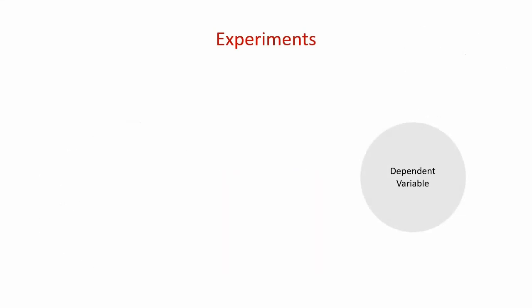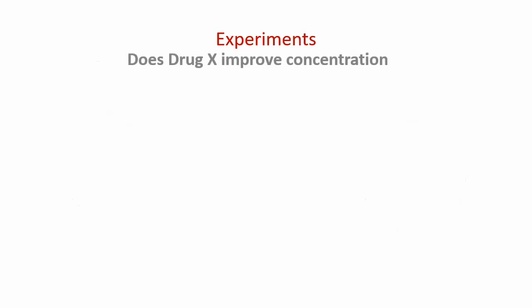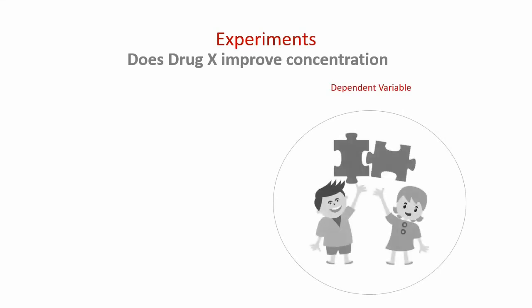The simplest type of experiment is to establish if there is a causal relationship at all. However, you can use multiple independent variables in more complex experiments. Here's an example of a classic experiment: we are trying to establish if a new drug improves concentration in children. The dependent variable is the kids' concentration, measured by how long it takes them to complete a puzzle.